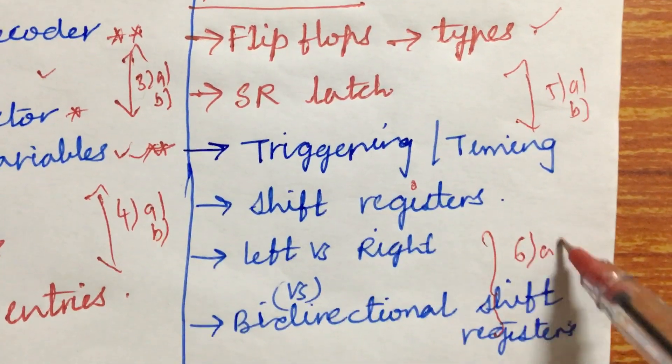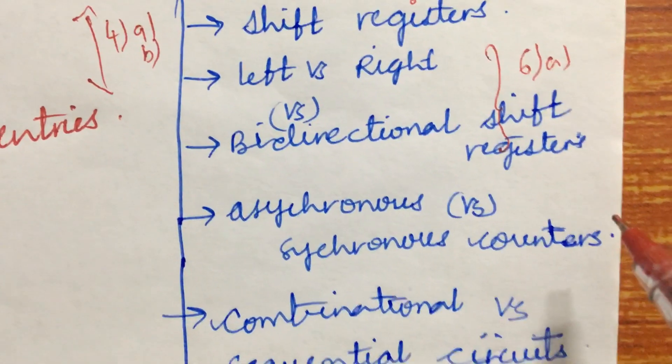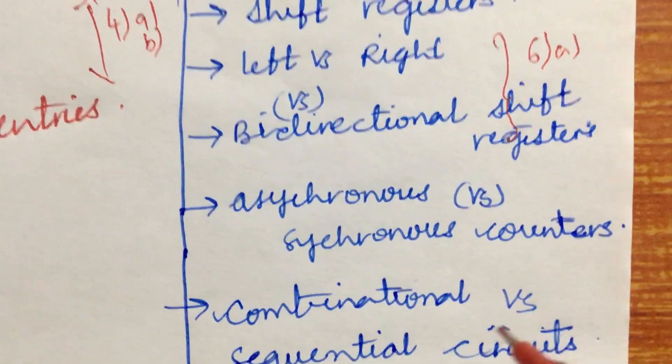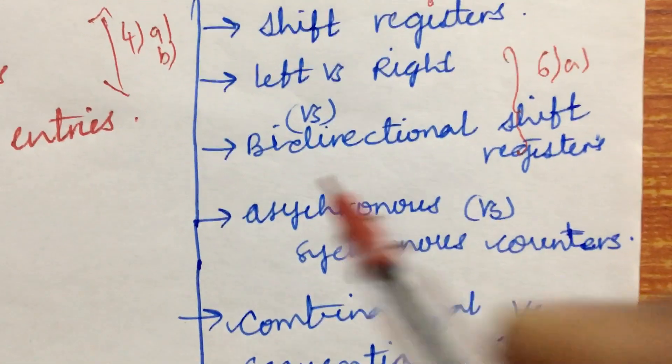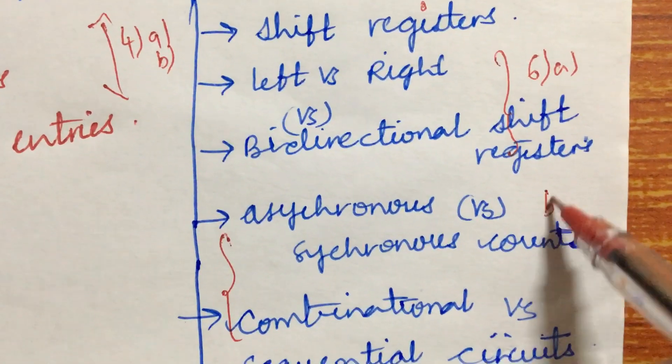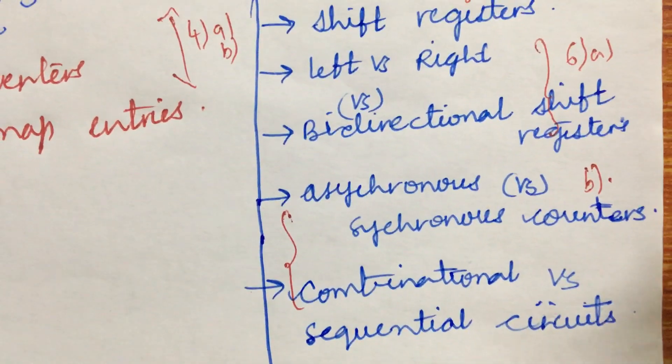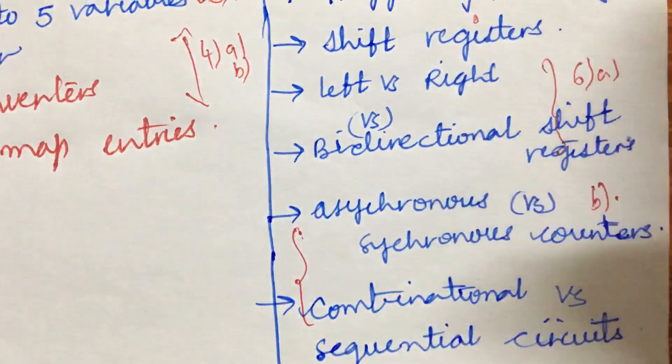And the synchronous as well as asynchronous counters or combinational or sequential circuits. From this part we can expect the B part. I have taken into consideration very important questions. As you have less time, please do concentrate at least 3 units or 2 units to the most so that you are going to clear this subject.